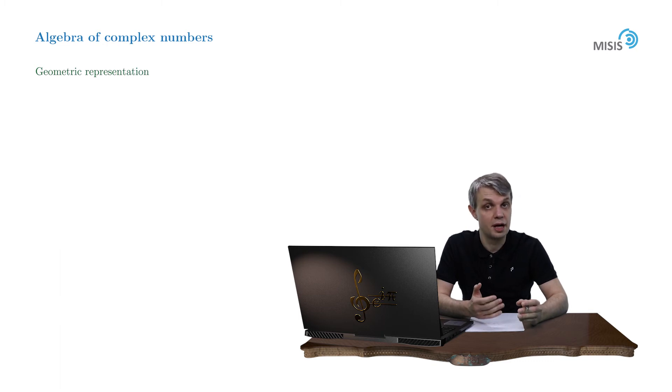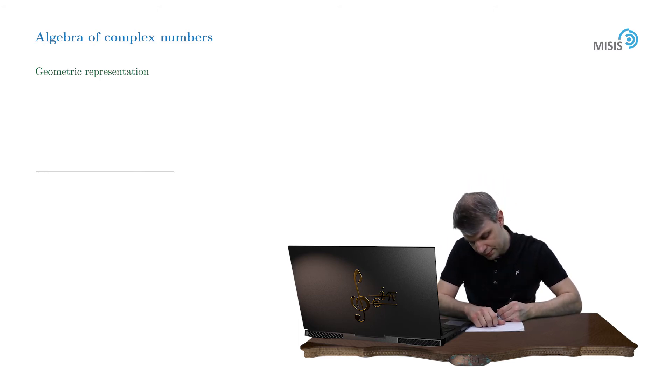Since a complex number is defined by a pair of real numbers, then the idea is to represent a complex number as a dot in a two-dimensional plane. So let's draw a complex plane with horizontal coordinate x and vertical coordinate iy. And represent a complex number by a dot with x-coordinate equal to the real part of our complex number and vertical coordinate by y.